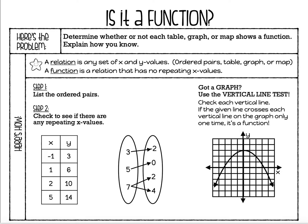A relation is any set of x and y values — let's highlight that because this is something kind of new. And as long as you have some x and y values, you have what we call a relation. Sometimes those x and y values will be given in ordered pairs, which is what we're used to. Sometimes we'll see them on a table, a graph, or a map. Now, some relations are also functions. The way that we know a relation is a function is the x values do not repeat. A function is a relation that has no repeating x values.